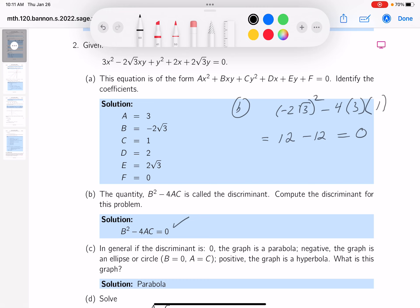So I said, next thing I'm going to look at C, it says, you know, in general, if the discriminant is 0, the graph is a parabola. Negative, the graph is an ellipse. And then they go on to say B is 0, A equals C, blah, blah, blah. Positive, graph hyperbola. Then it goes on to, what is the graph?